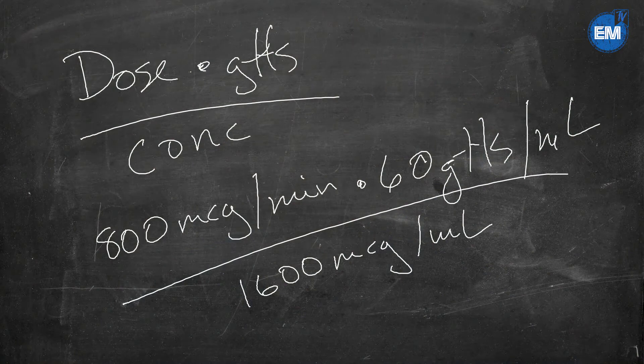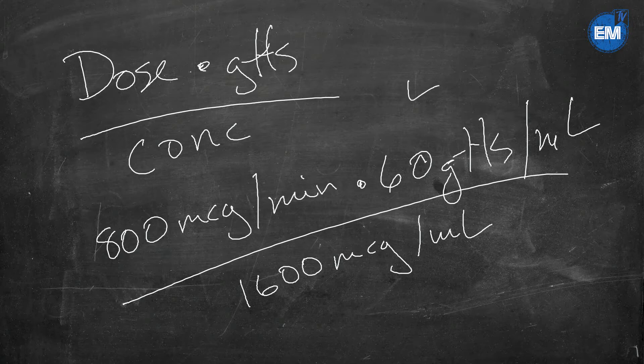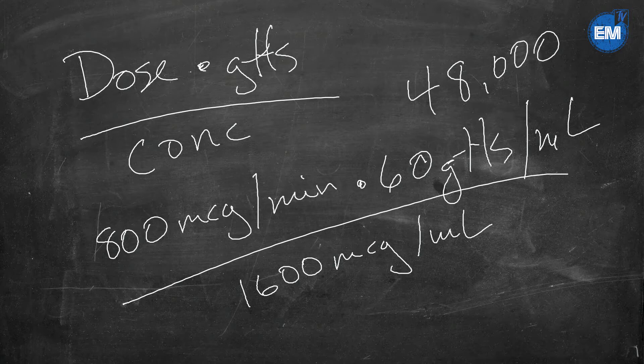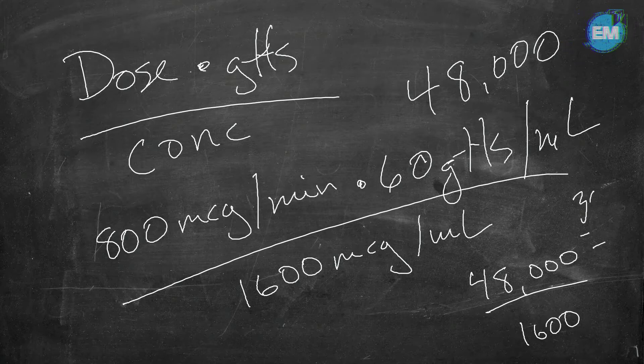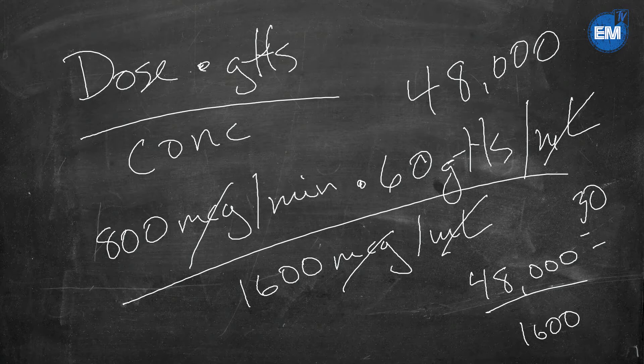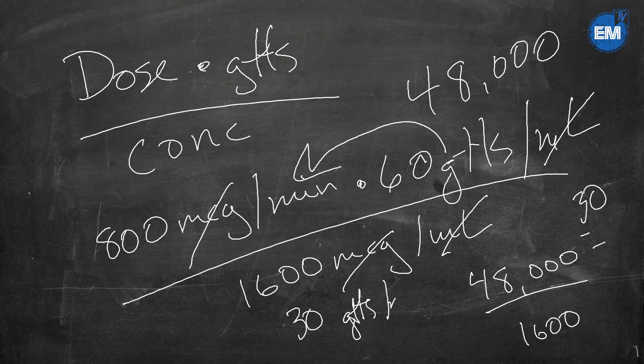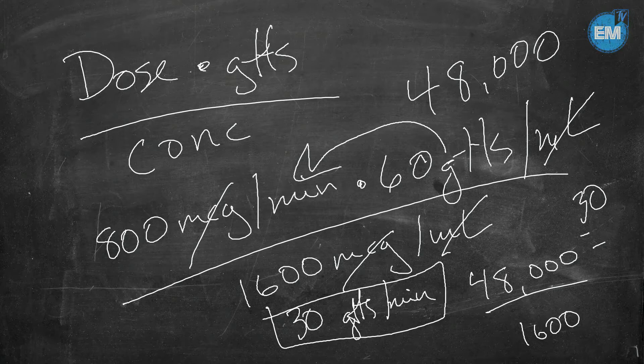So if I multiply 800 times 60 drops per minute, that's going to give me 48,000, and then that 48,000 is then divided by the 1600, and this will equal 30. Now, 30 what exactly? So I always recommend canceling out your redundant or duplicate values right off the gate. So micrograms and micrograms will cancel, milliliters and milliliters will cancel. So you're left with drops per minute. So this becomes 30 drops per minute, and that's what you would hang for your infusion.